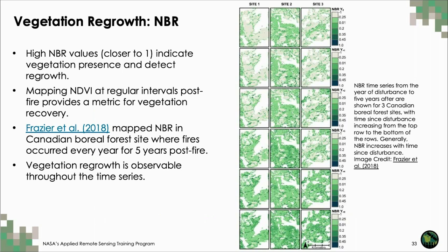The NBR can be a useful metric for mapping vegetation regrowth over time. Higher NBR values above zero can indicate vegetation regrowth in burned areas. An example here shows Landsat NBR mapped post-fire every year for five years in three Canadian boreal forest sites. Over the course of the time series, NBR values generally increase in burned and barren areas across the three sites, making this a really useful metric especially if you're already using NBR to assess burn severity.